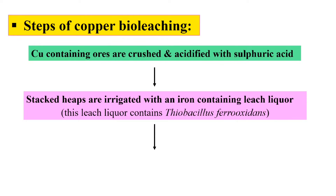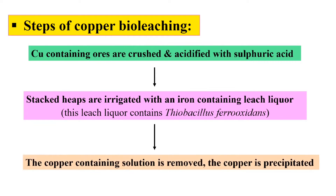This leach liquor contains the bacteria Thiobacillus ferrooxidans, which grows on the surface of the ore and catalyzes the release of copper. Once copper is released, this copper-containing solution is removed, copper is precipitated, and the water can be reused after adjusting its pH to 2.0. So these are the various steps by which copper can be extracted.